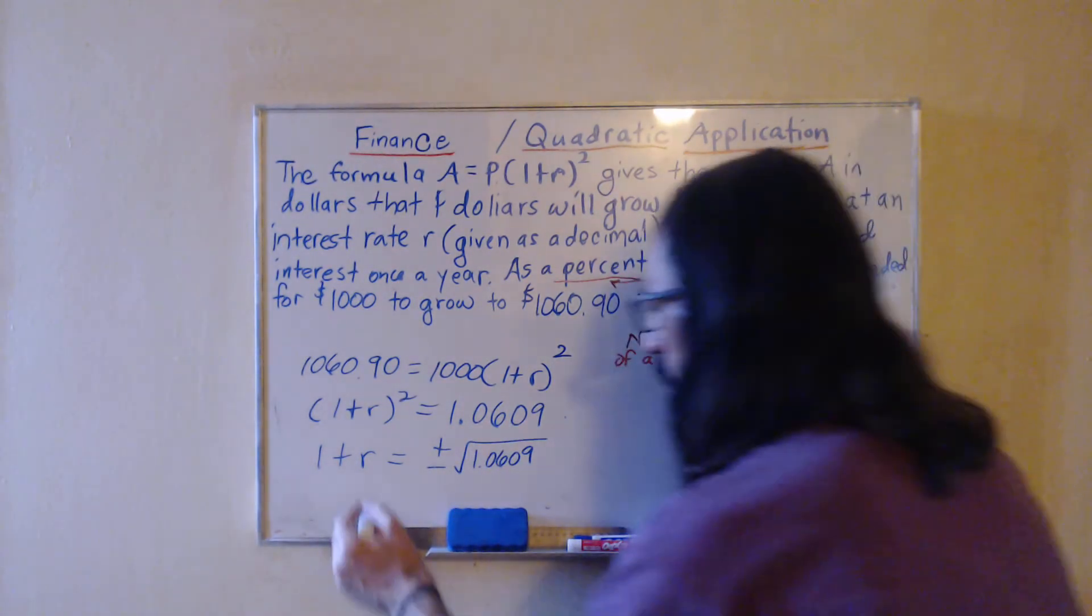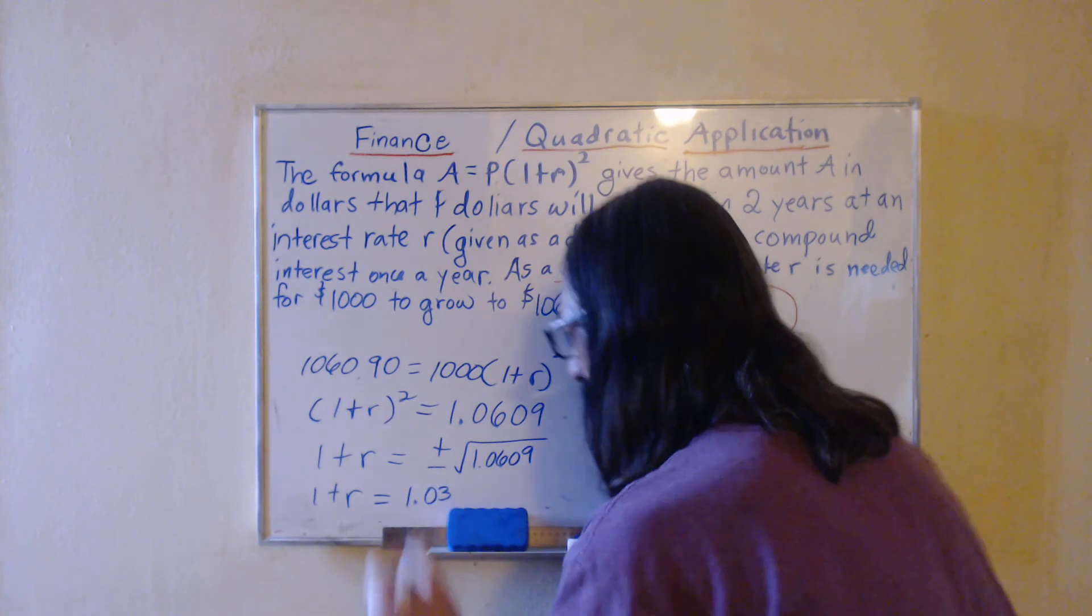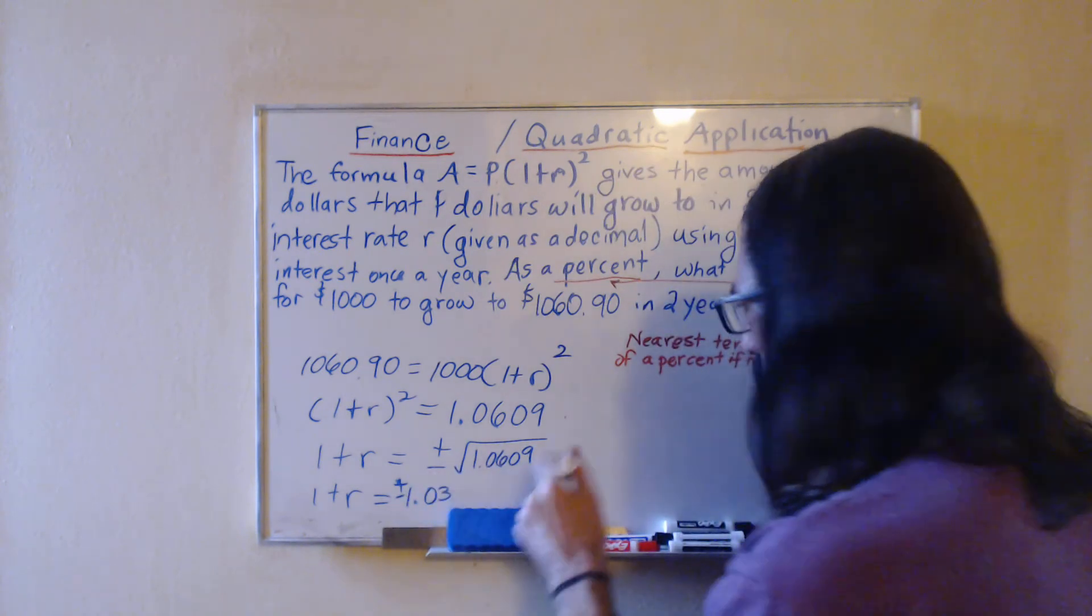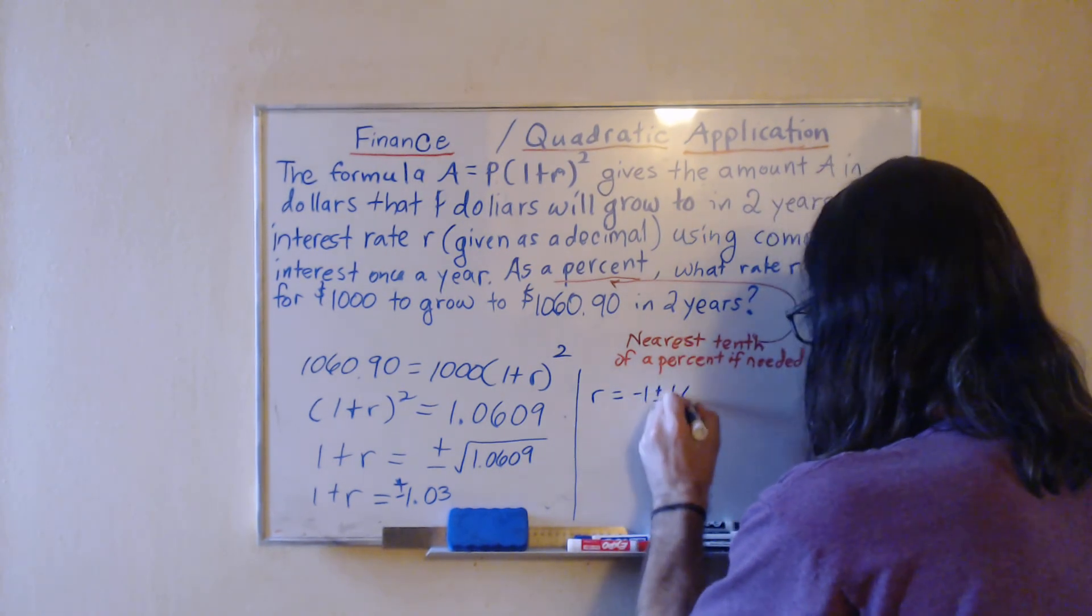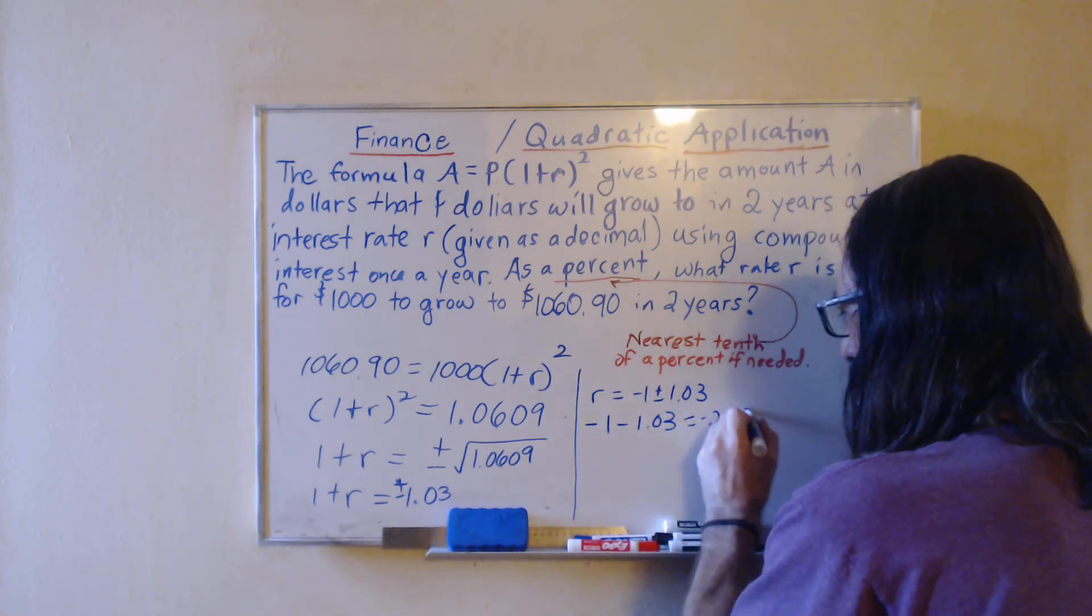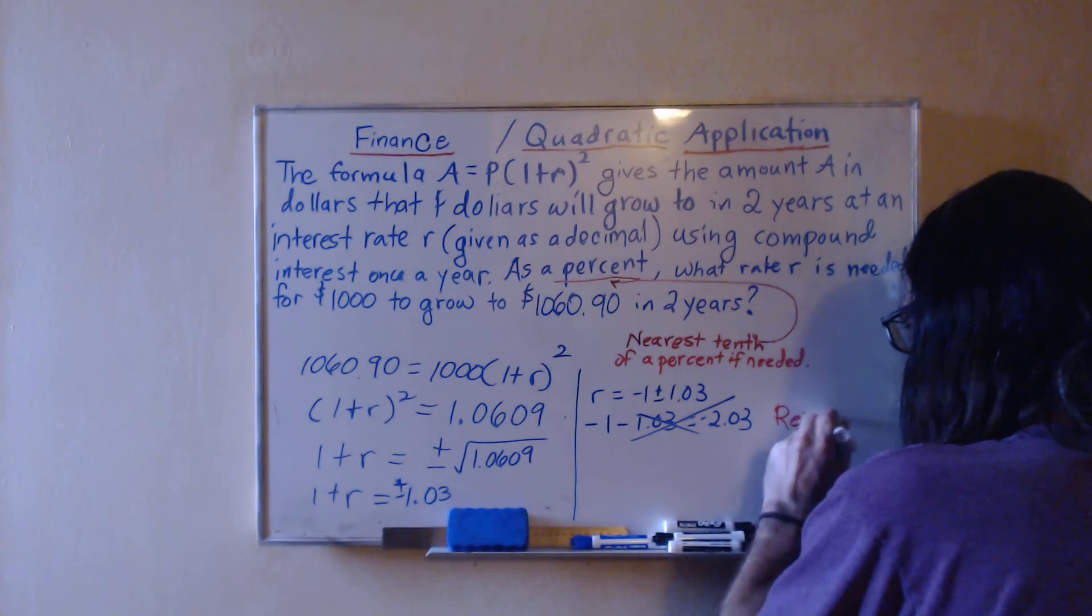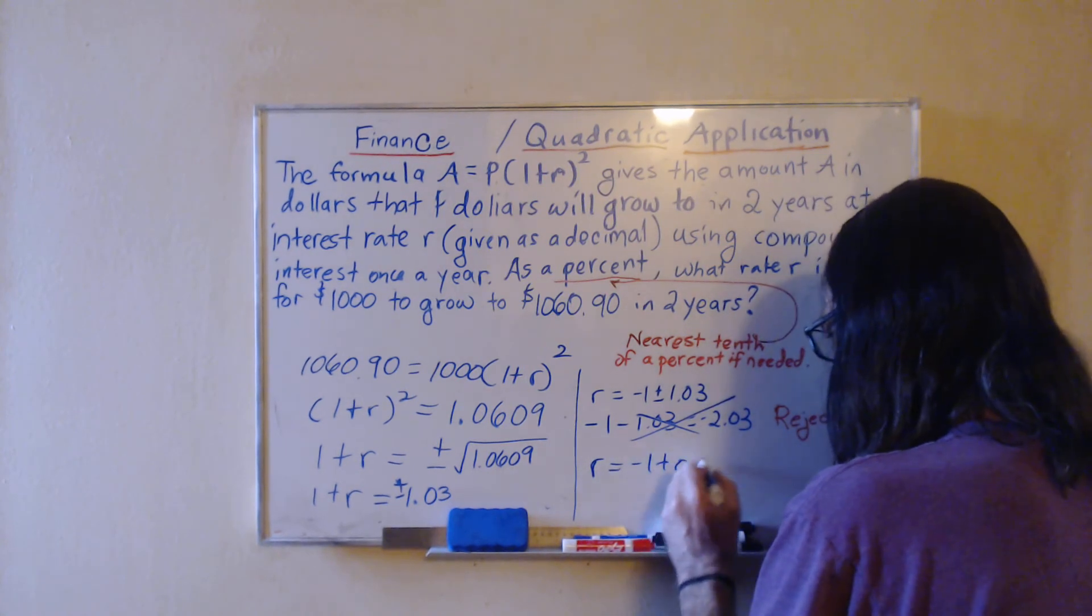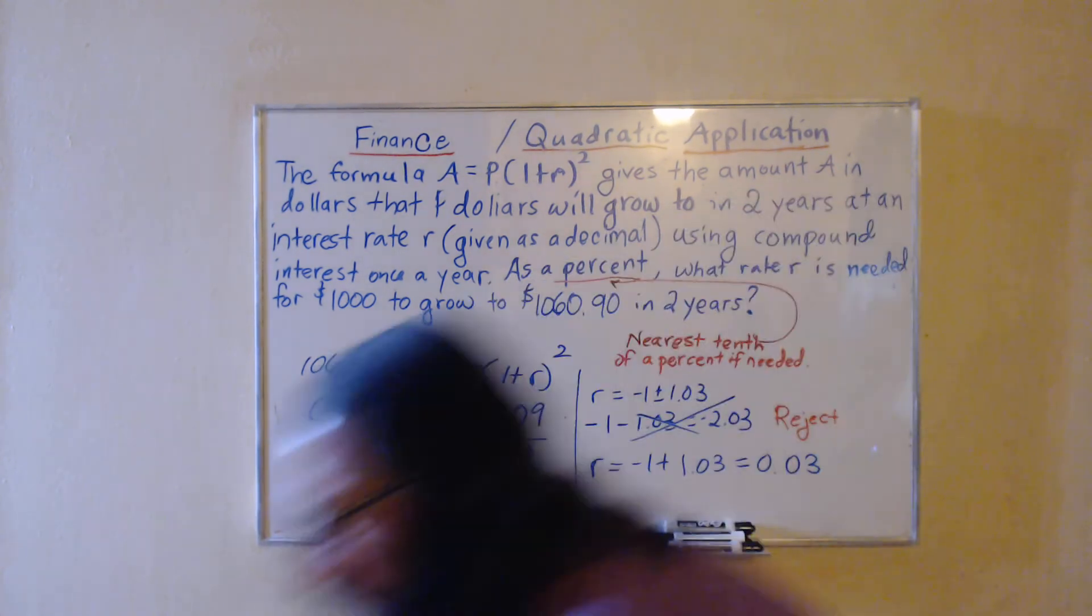The square root of 1.0609 is 1.03, plus or minus. Isolating r by subtracting one, we don't talk about negative interest rates so we're going to reject negative 2.03. And if we add instead, we get 0.03, which as a percent is exactly equal to 3%.